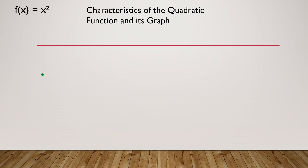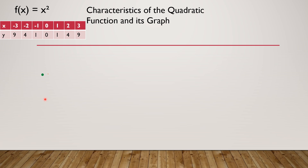Now we're going to learn about the characteristics of a quadratic function and its graph. I have here f(x) = x². I have here the table of values of this equation. Simply, you're going to assign values of x: negative 3, negative 2, negative 1, 0, 1, 2, and 3. Then substitute these values of x — instead of x, you write negative 3, then square it, that is 9.